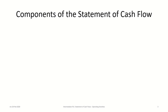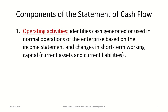Before we begin constructing our statement of cash flows, we will briefly review the three components. The first section is operating activities, which identifies cash generated or used in normal operations of the enterprise based on the income statement and changes in short-term working capital — i.e., changes in current assets and current liabilities.